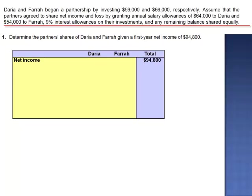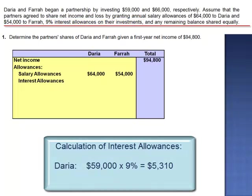We begin with net income of $94,800, then look at the allowances. Salary allowances are $64,000 to Daria and $54,000 to Farah. Interest allowances are calculated as a percentage of their investment balances. For Daria, 9% of $59,000 is $5,310. For Farah, 9% of $66,000 is $5,940.